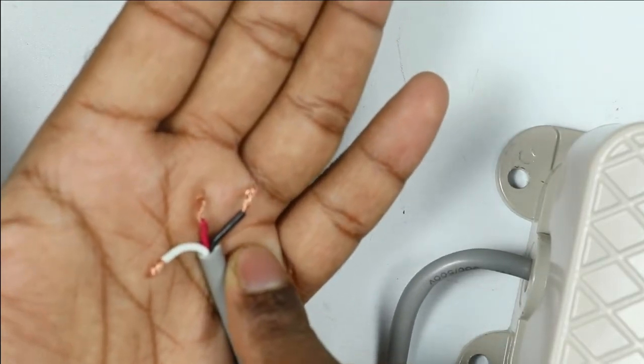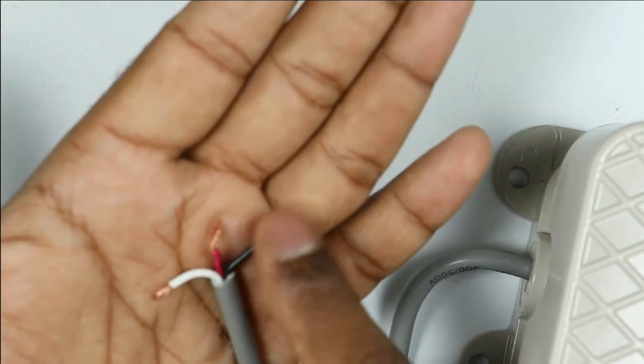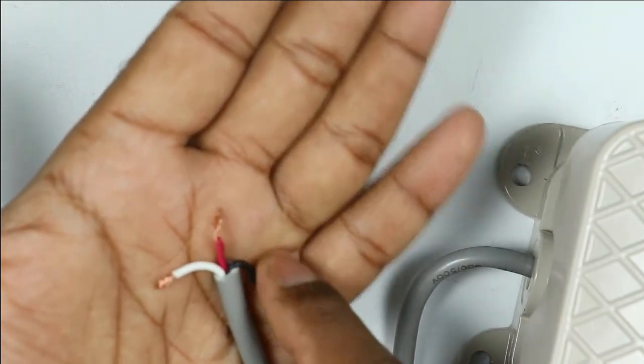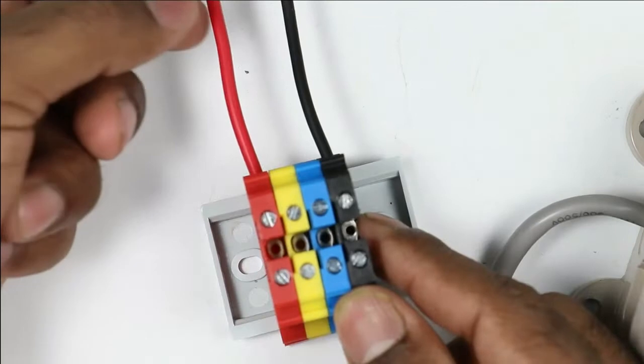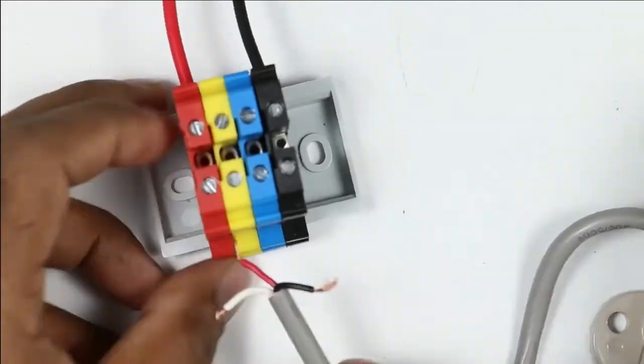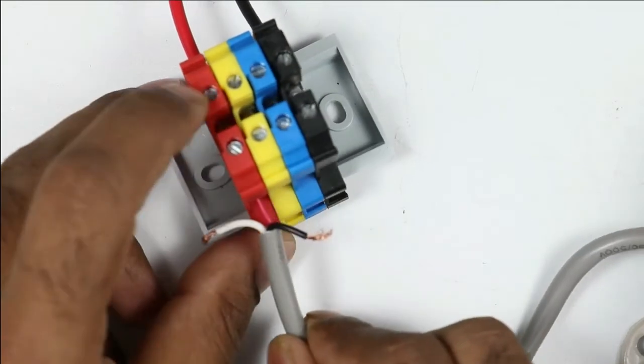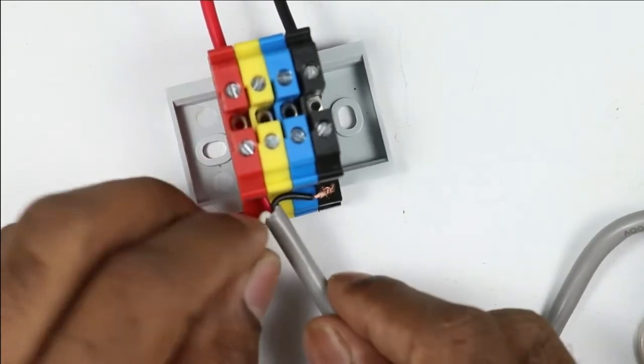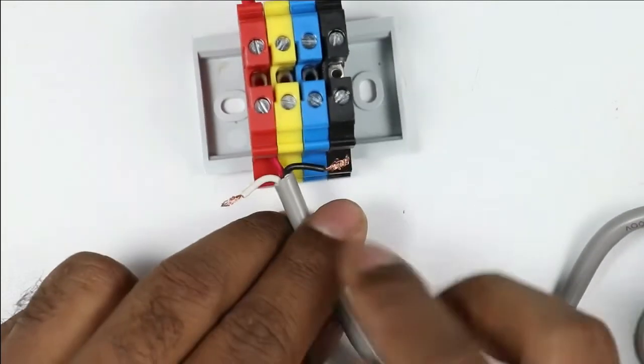We have to use the NO contact for connection. This means we will use white wire and red wire for connection. I am taking this red wire and the wire which is for phase supply. This wire is for incoming phase supply. I am connecting this red wire with the phase supply wire. From this white wire, we receive the output signal.